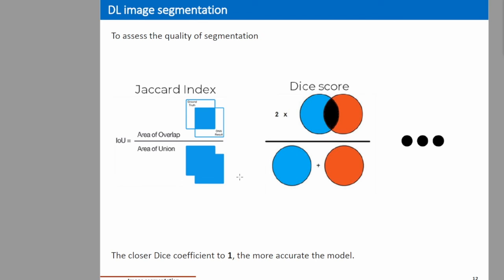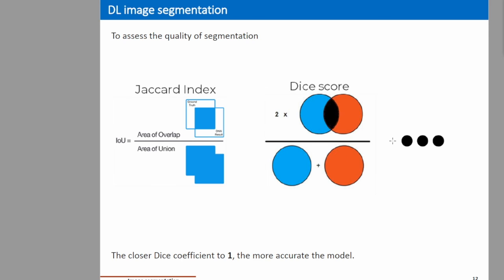Now let's look at how we can evaluate our segmentation. There are different metrics for evaluating segmentation performance. The Jaccard index, also known as Intersection over Union (IoU), takes the ratio of the area of overlap between the ground truth and the segmentation result over their area of union. Another widely used metric is the Dice score, which is two times the area of overlap divided by the area of union. There is also the F1 score, which is close to the Jaccard index. For all these metrics, the closer the value is to 1, the more accurate and efficient the segmentation.